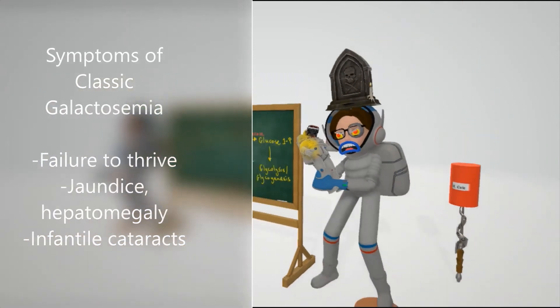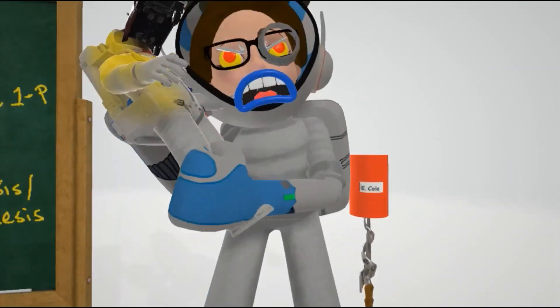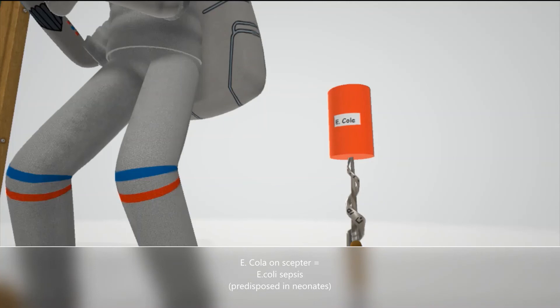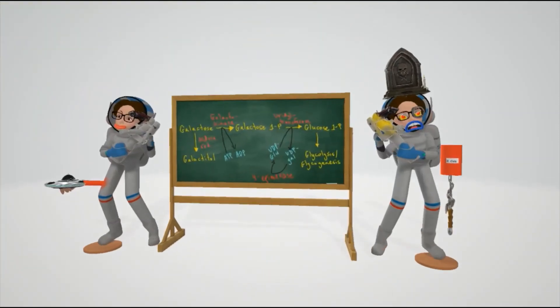Behind her, there's this cola can that says E. coli on it - the E. coli can on top of the scepter helps us remember the E. coli sepsis. Classic galactosemia can predispose to E. coli sepsis in neonates.